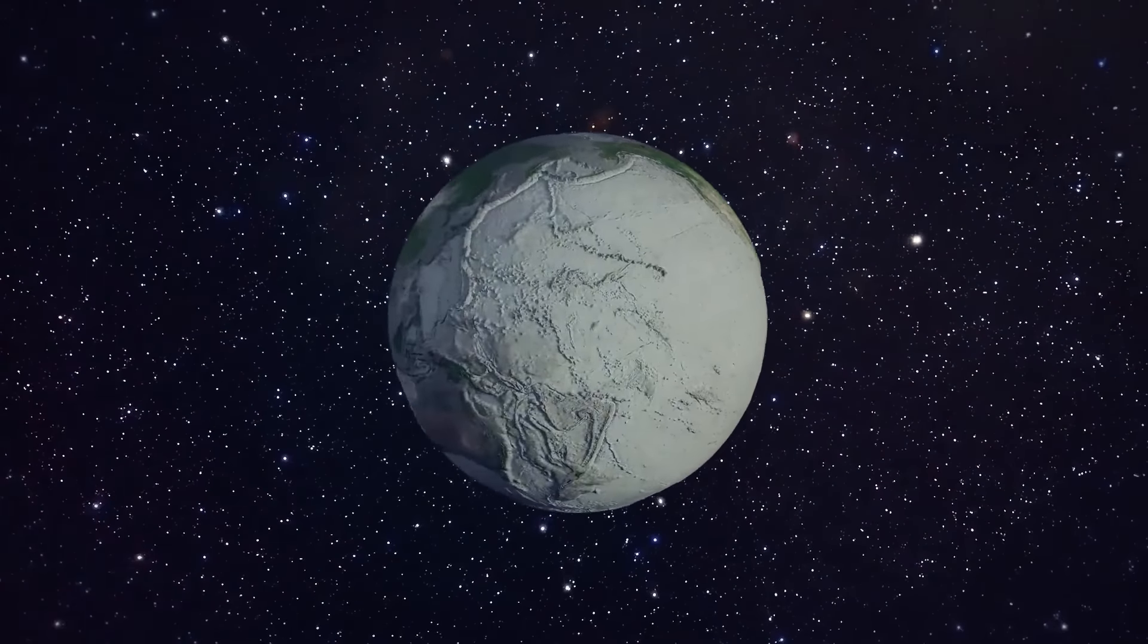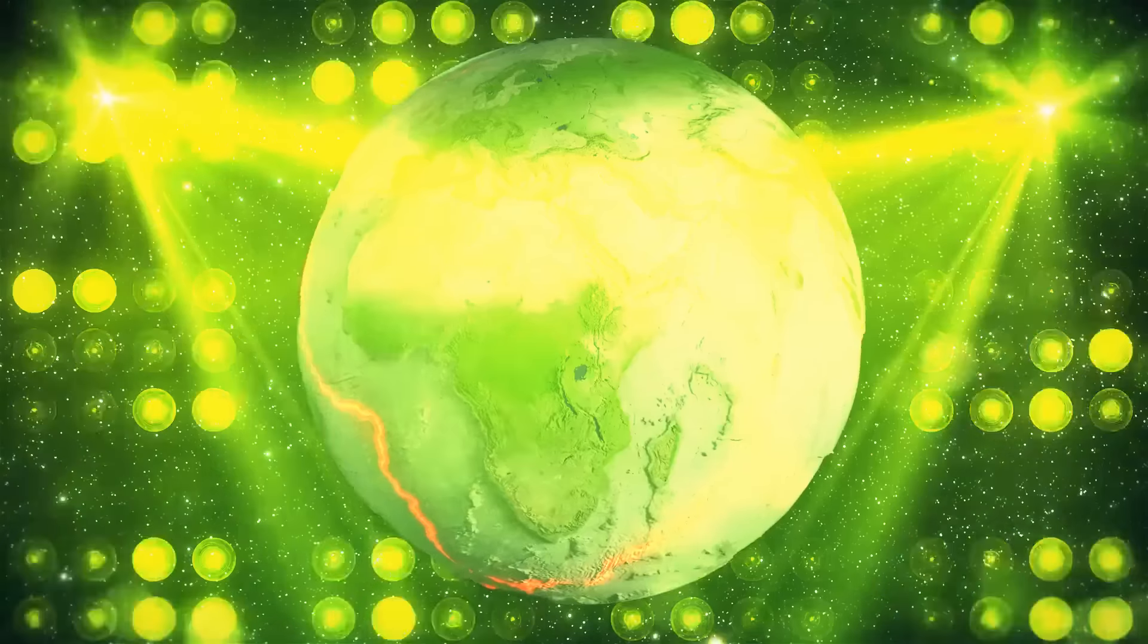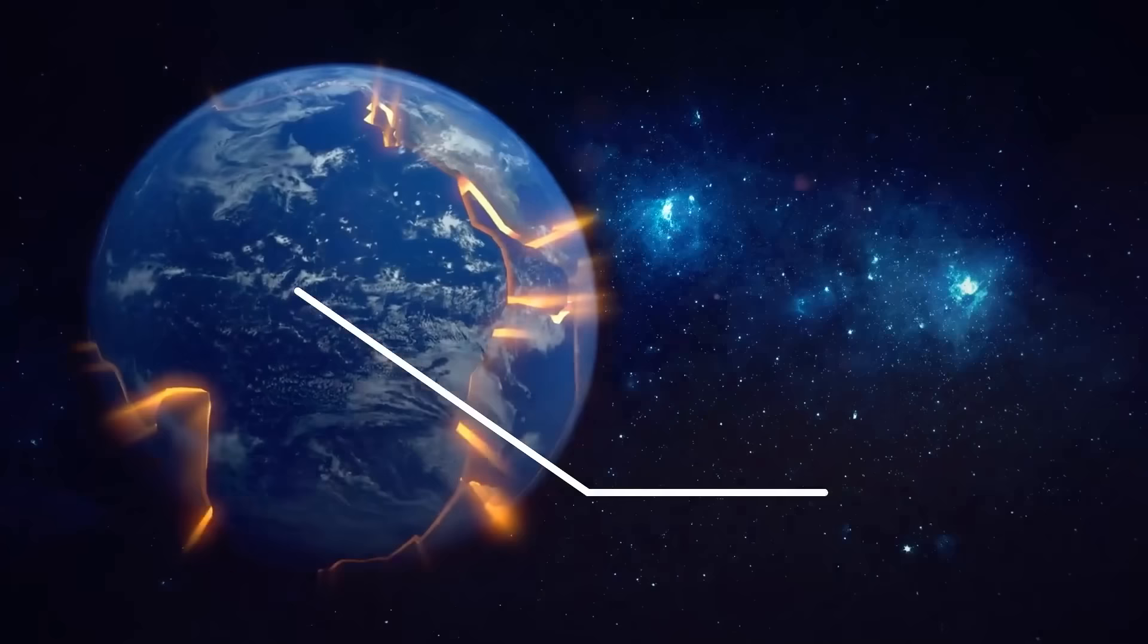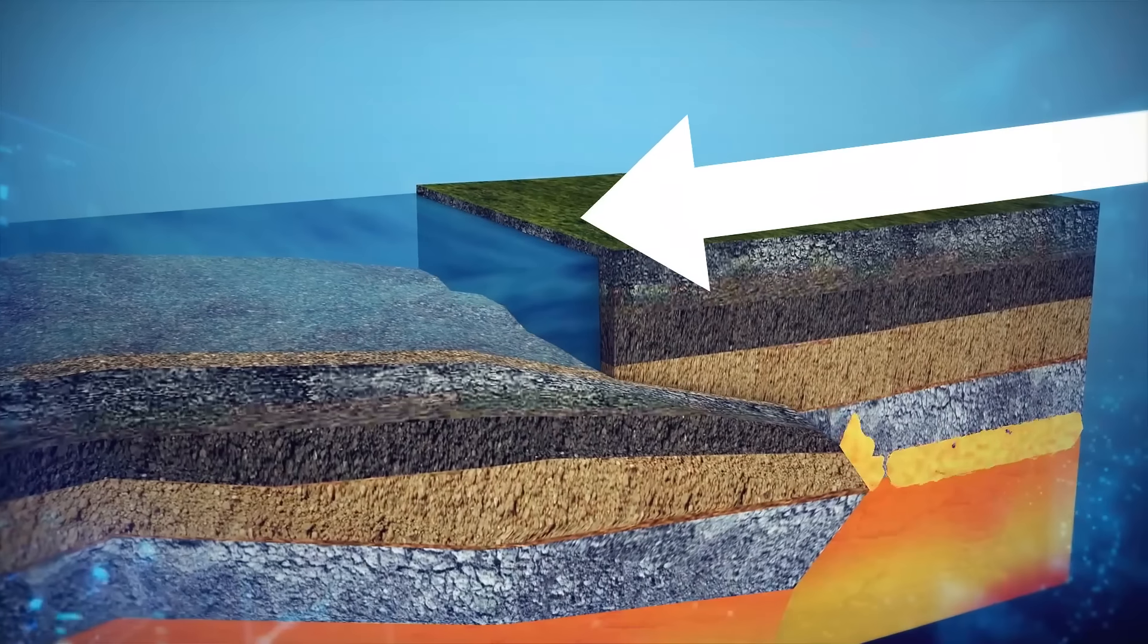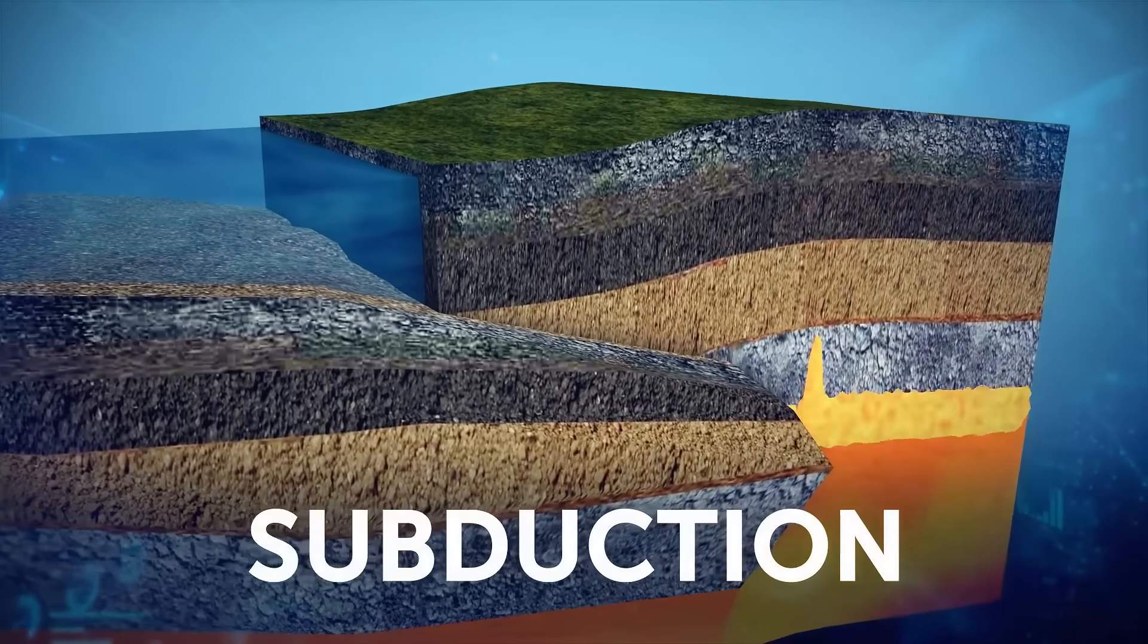Millions of years later, the Earth's tectonic plates, those puzzle pieces that make up our planet's crust, started throwing a wild party. The mighty Pacific plate, the heavyweight champion of tectonic plates, decided to take a dive beneath Zealandia's continental crust. This process is called subduction.